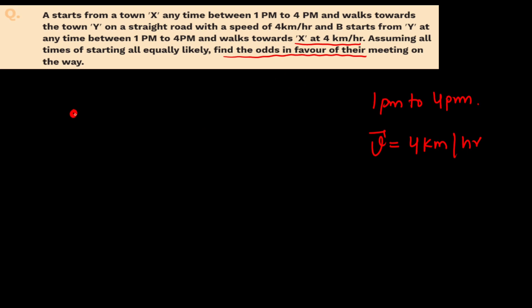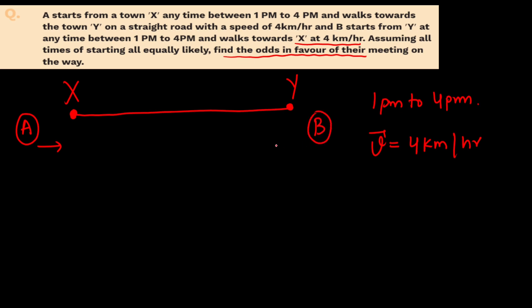Let's understand the problem. Let's say town X is here and town Y is here. Person A starts from town X and travels towards town Y in a straight line, and person B travels towards town X. The distance between both towns is 4km.